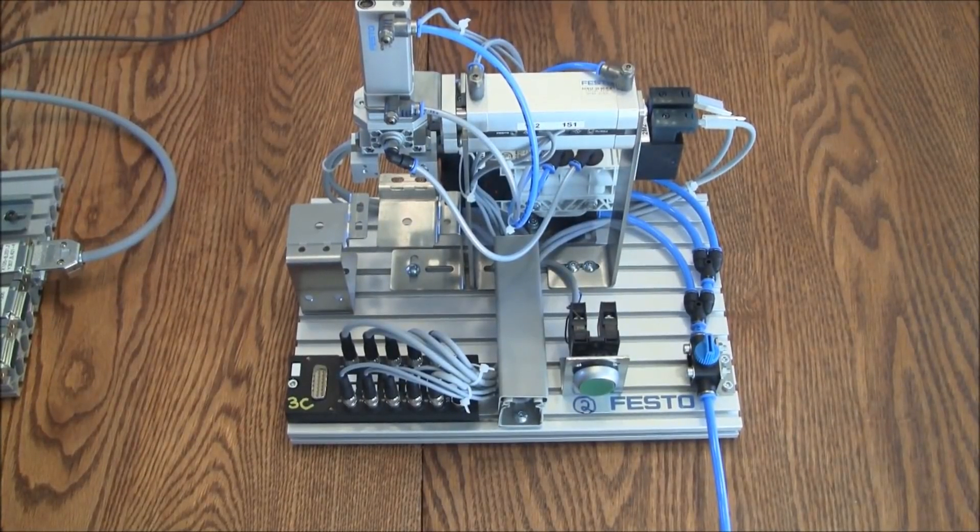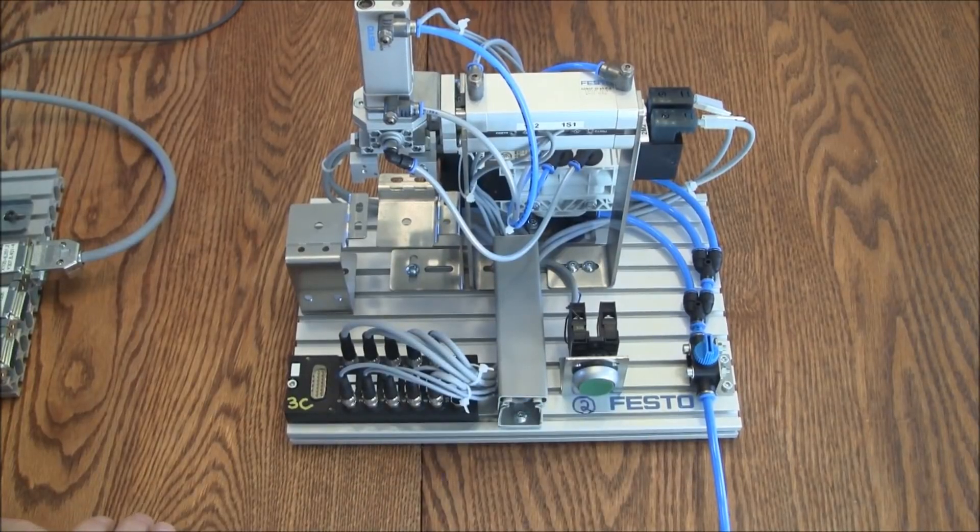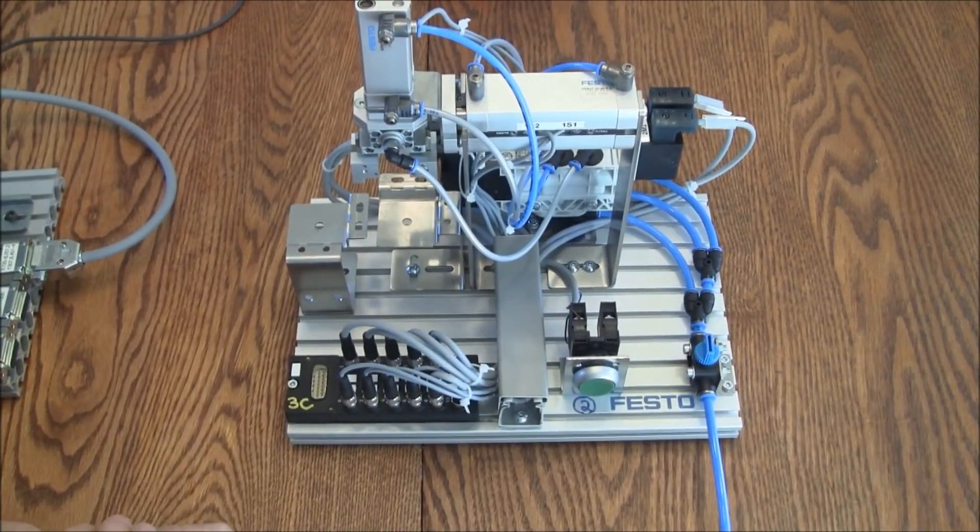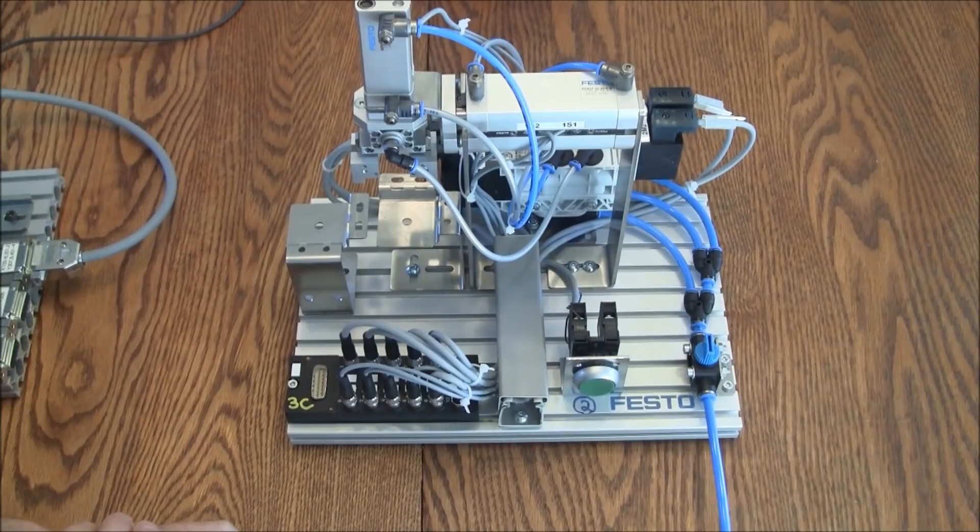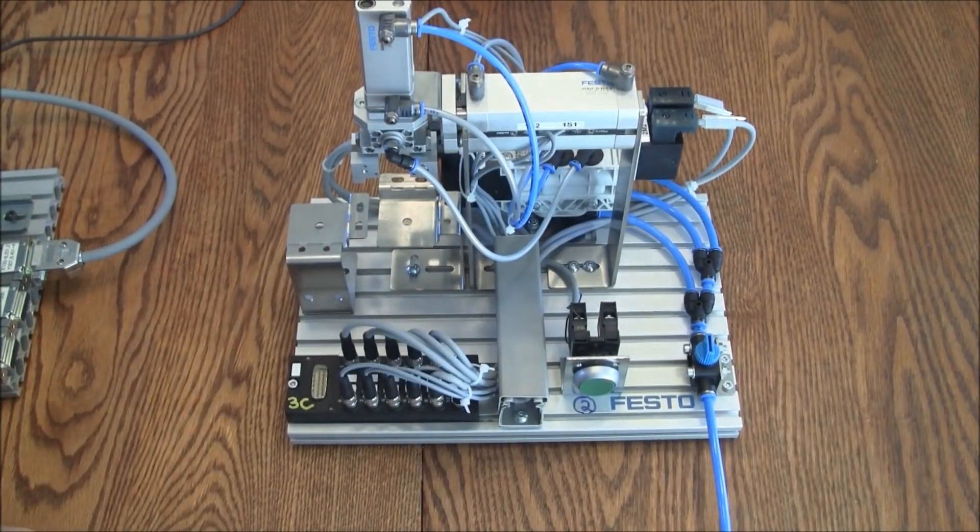In my previous videos I've shown you some of the other Festo Mechlabs. There are three different Mechlabs. This is the third one, the robotic stacker, which simply moves a part from one location to another.